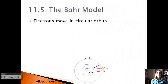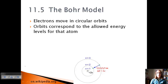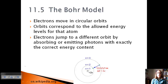We ended our discussion last time talking about atomic spectra with hydrogen — that electrons would jump orbits and then jump back and give off energy, which you would see as light. The Bohr model says that electrons move in circular orbits, and these orbits correspond to allowed energy levels. When an electron gains energy, it jumps further away from the nucleus by absorbing or emitting photons with exactly that energy content.